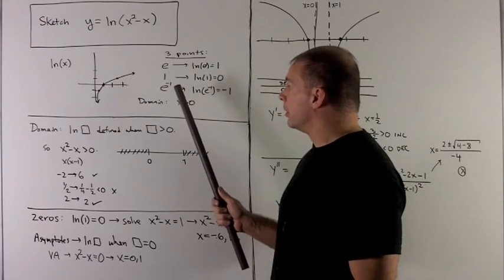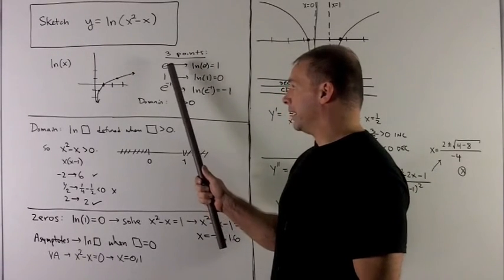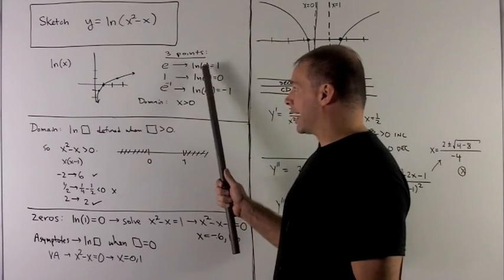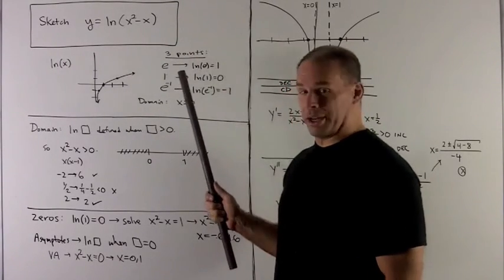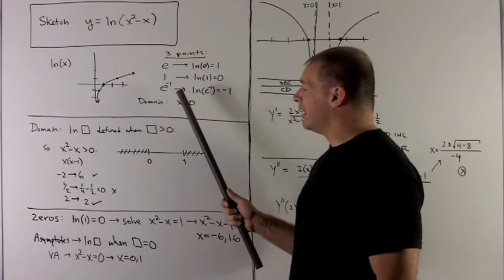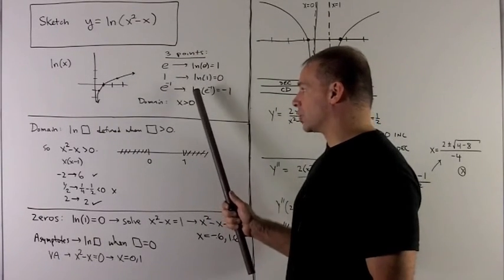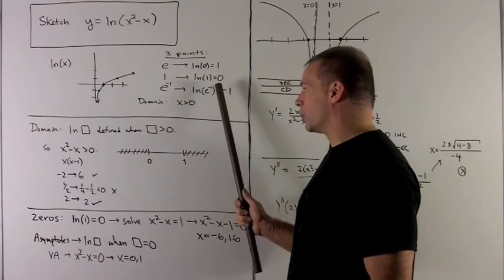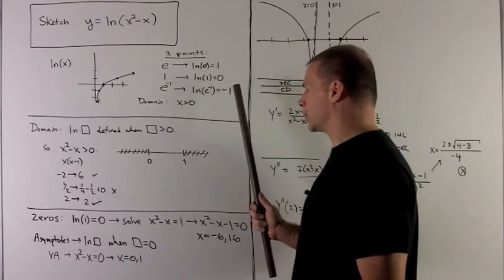First three are going to be three points. If I put e into natural log of x, natural log of e equals 1. If I put 1 into natural log of x, natural log of 1 equals 0. And if I put e to the minus 1 into natural log of x, natural log of e to the minus 1 equals minus 1.